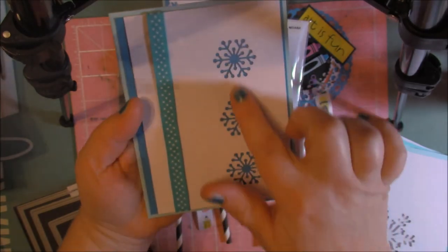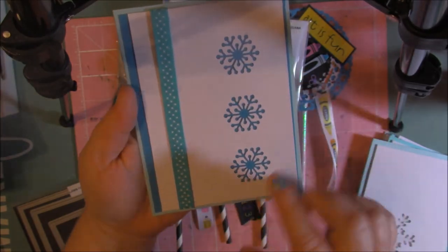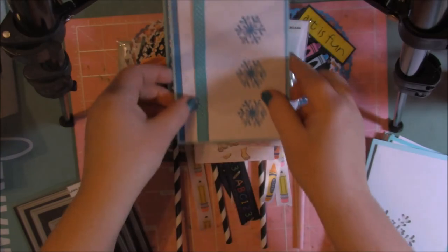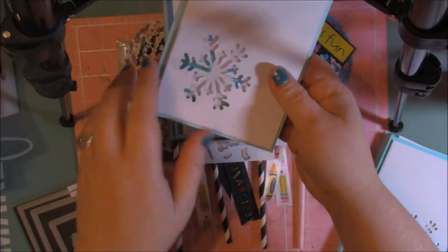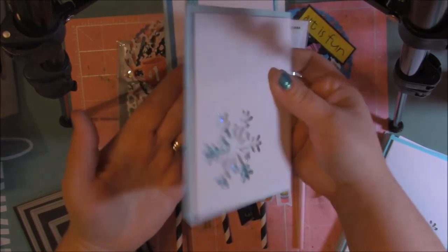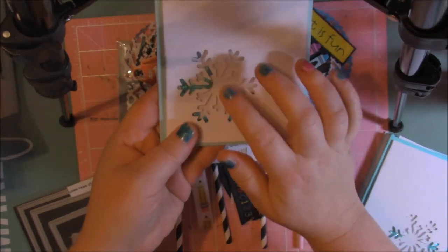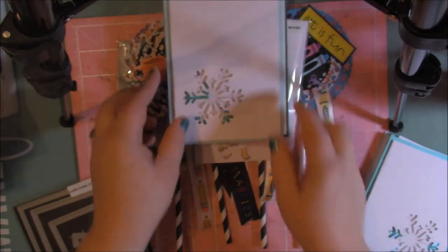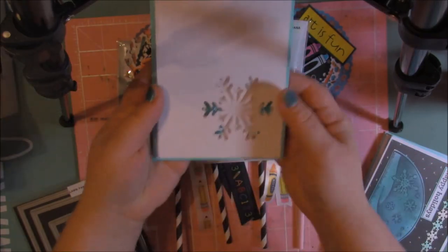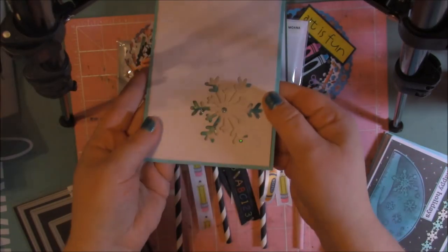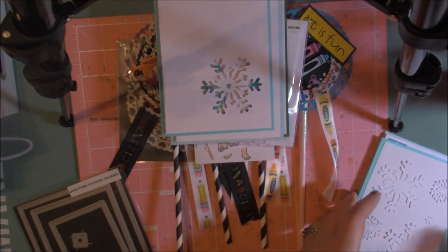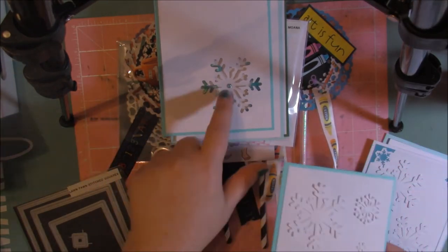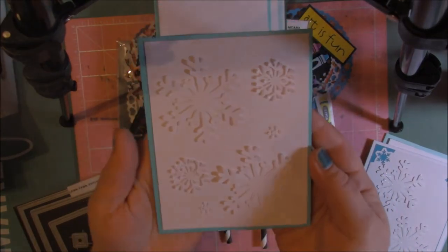And then here's this one where I punched out some snowflakes and then I put the blue behind it. And then here I punched out a snowflake and then I used the negative as like a shaker card. Same here. Same thing. Used it as a shaker. And then I used some of the cuts from these and made this card here.